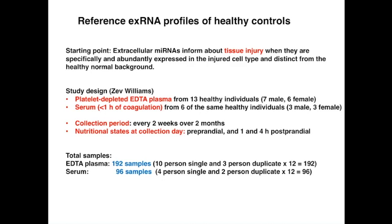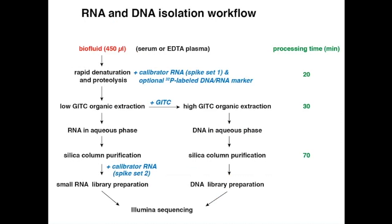Some samples were processed in duplicates. In total, we processed 192 plasma samples and 96 serum samples. Plasma is when you centrifuge down the cell pellet — in this case, platelet-depleted plasma. Serum is collected when you carry the blood through coagulation and then remove the blood clot. When we isolate RNA, we try to adapt it to small volumes typically available in clinical archives, beginning with 450 microliters of plasma or serum, which means you start with about 1 milliliter of blood. About 50% is serum or plasma liquid collectable from whole blood.